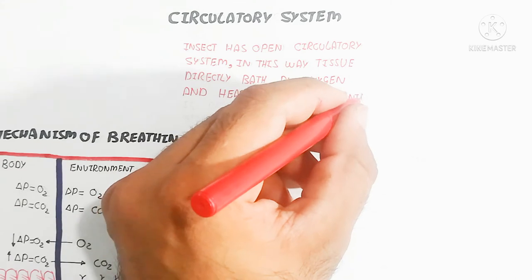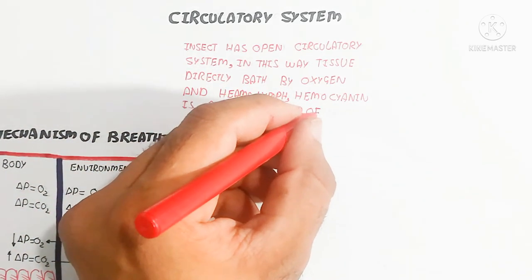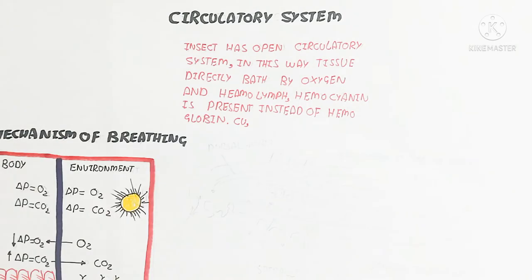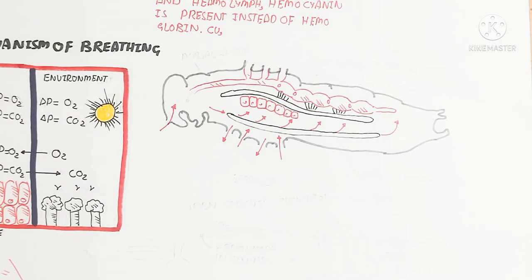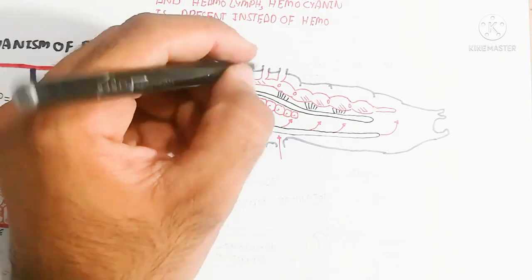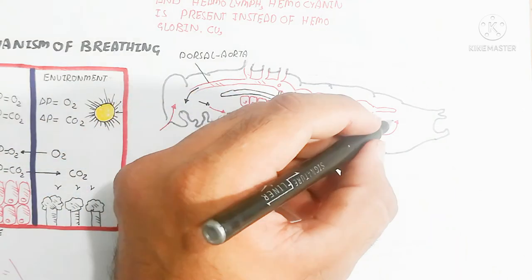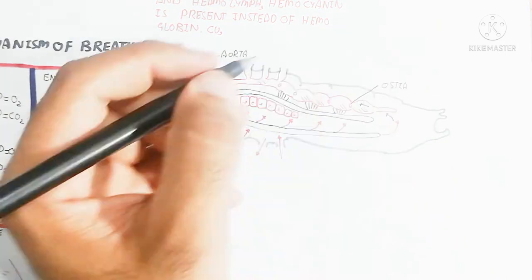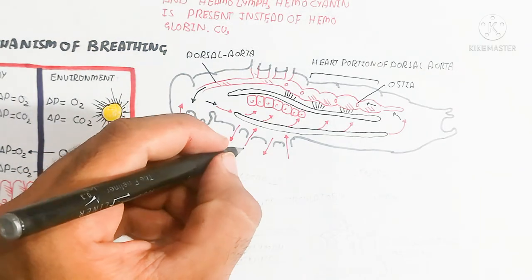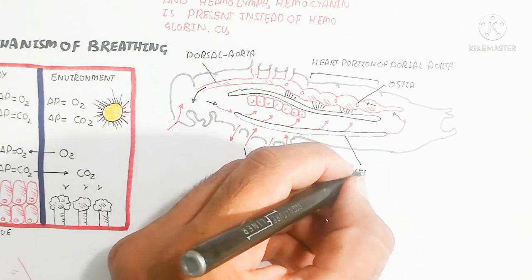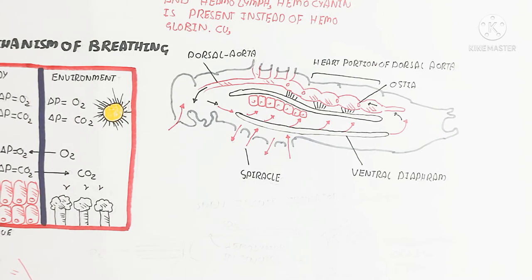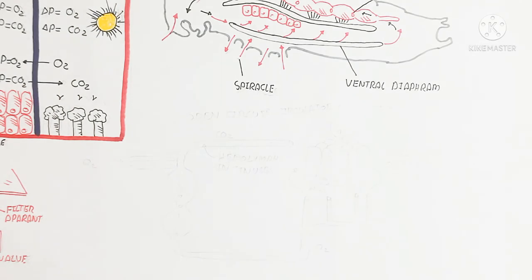The circulatory system in insects is an open circulatory system, where tissue is directly bathed by oxygen and hemolymph. Hemocyanin is present instead of hemoglobin — it is a copper-containing protein that is the central unit of the hemolymph. The dorsal aorta pumps blood openly into the tissue. Ostia are used for the movement of hemolymph by contraction of the sinuses. A ventral diaphragm is also present.